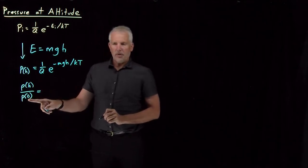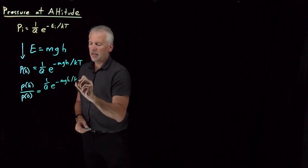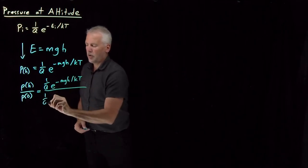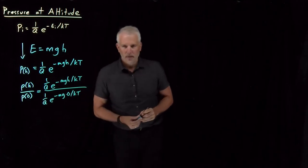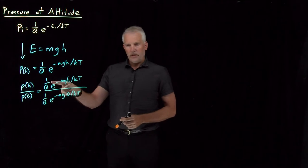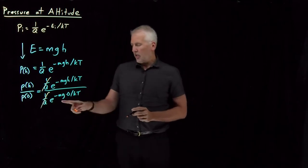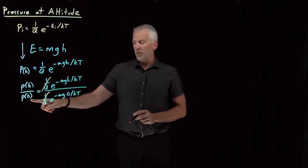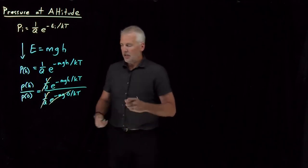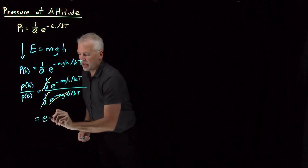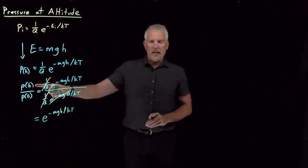Probability of being at h relative to the probability of being at zero is just using this equation twice: 1 over q times e to the minus mgh over kT divided by 1 over q times e to the minus mg times zero over kT. Then the reason we used two different probabilities stacked on top of each other is purely because this 1 over q term is going to cancel out. Another useful thing happens because my denominator has h equals zero, e to the zero is equal to one, and I don't need to worry about that exponential in the denominator. And the result here is just e to the minus mgh over kT.